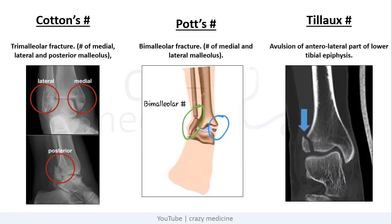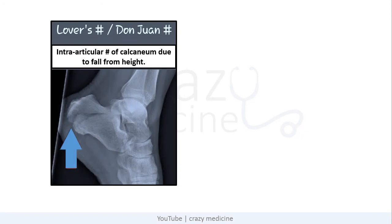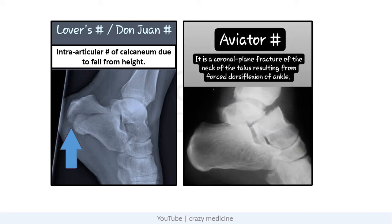Then Tillaux fracture — it is avulsion of the anterior part of the lower tibial epiphysis. Then Lover's or Don Juan fracture — it is an intra-articular fracture of the calcaneum due to fall from height. Then Aviator's fracture — it is a coronal plane fracture of the neck of the talus resulting from forced dorsiflexion of the ankle.